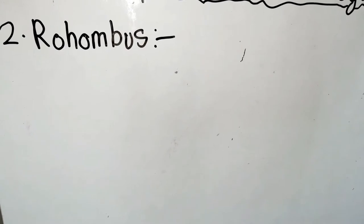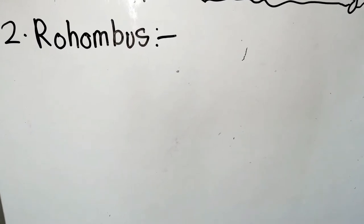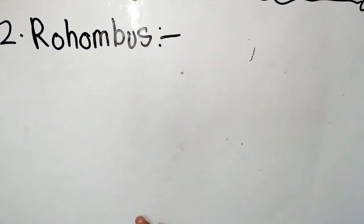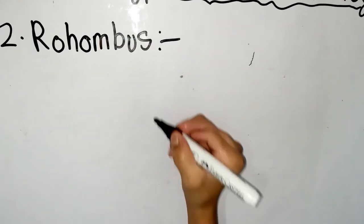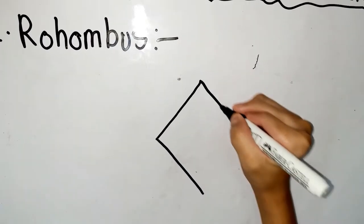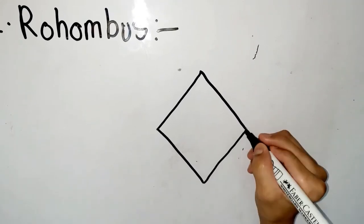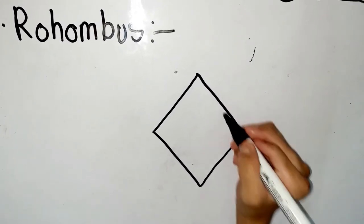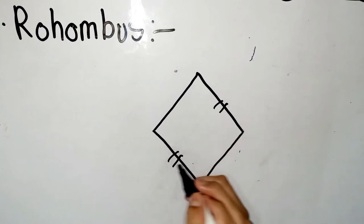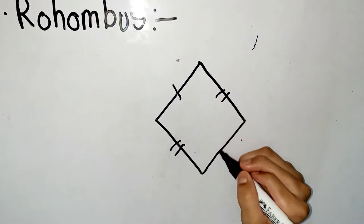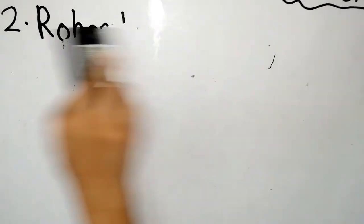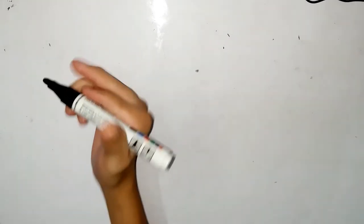A rhombus is a flat shape with four equal straight sides — it's basically like a diamond shape. This side is parallel to this side, and this side is parallel to this side. Now we will talk about rectangle.